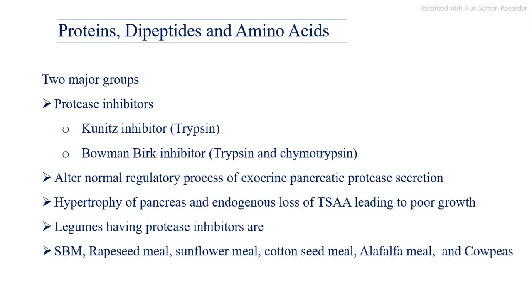Proteins, dipeptides, and amino acids include two major groups of protease inhibitors: the Kunitz inhibitor (trypsin) and the Bowman-Birk inhibitor (trypsin and chymotrypsin). These alter the normal regulatory process of exocrine pancreatic protease secretion, leading to hypertrophy of the pancreas and endogenous loss of sulfur amino acids, resulting in poor growth. Legumes having protease inhibitors include soybean meal, rapeseed meal, sunflower meal, cottonseed meal, alfalfa meal, and cowpeas.